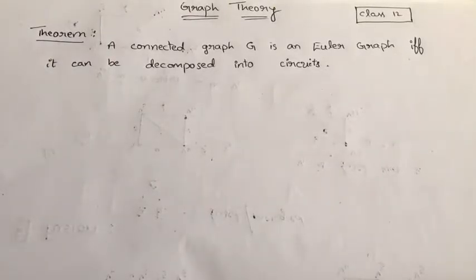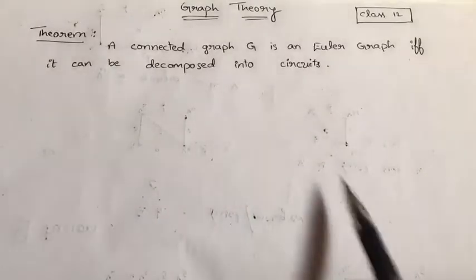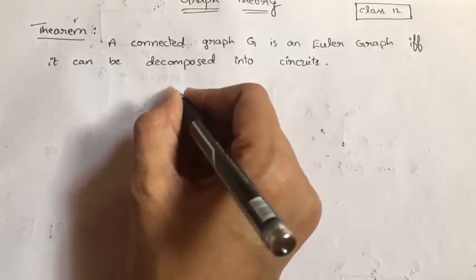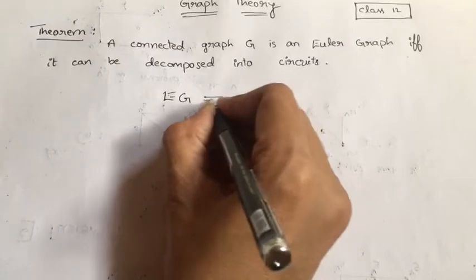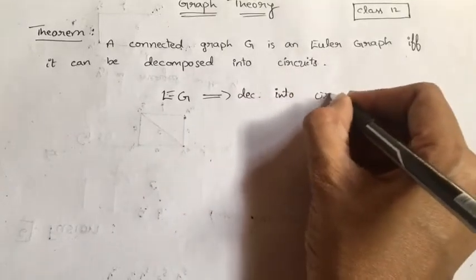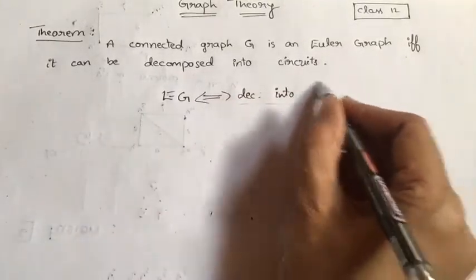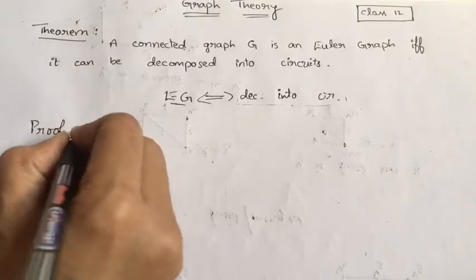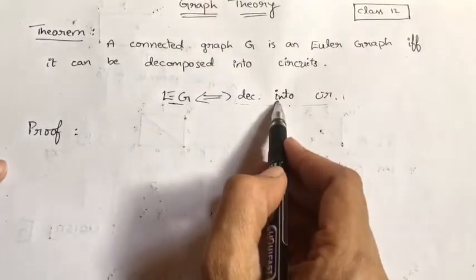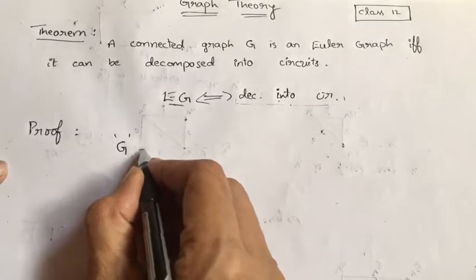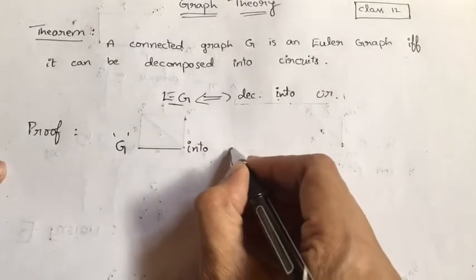We will prove the theorem in two parts: if the connected graph is an Euler graph then it can be decomposed into circuits, and if a graph can be decomposed into circuits then that graph has to be an Euler graph. I will take the second part first — suppose G is my graph which can be decomposed into circuits.